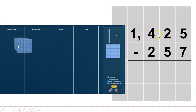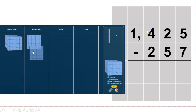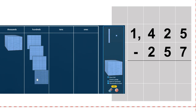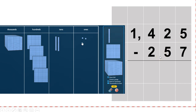Now the first thing I want to do is build that top number — my minuend. So I have one thousand. I need to bring four of those hundred blocks over: one, two, three, four. I have two tens: one, two. And five ones.